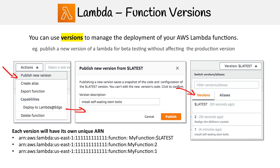Every time you publish a version of a lambda, it has its own unique Amazon Resource Name. So we have version one, version two, and then dollar sign latest points to the latest version. The latest version is not labeled three, but it technically is version three. When you publish your next one, that becomes three, and the current one becomes latest.